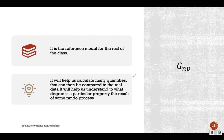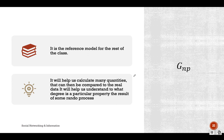A real network looks very different from a random graph model. However, we still study this model because it serves as the reference model for the rest of our discussion. This model helps us calculate many quantities that we can compare to real data, helping us understand to what degree a particular property is the result of a random process. This concludes our discussion of the random graph model — the simplest graph model — and the end of Module 3.